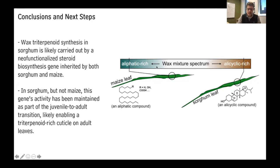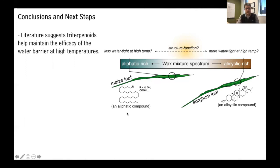So the maize leaf is on the aliphatic-rich end of the spectrum and the sorghum leaf is on the allicyclic-rich end — and maize could have been on that end had it maintained this gene. This is particularly interesting because aliphatic-rich waxes seem to be less watertight at high temperatures, while allicyclic-rich waxes seem more watertight. While we're still working on the details of this structure-function relationship, there is a fair amount of evidence pointing in this direction, and it's intriguing that this underlies the difference between maize and sorghum.